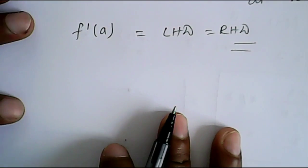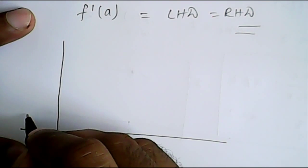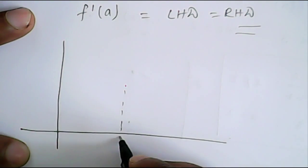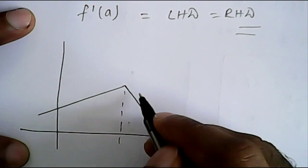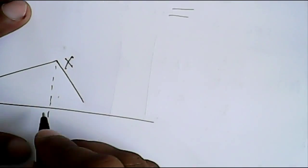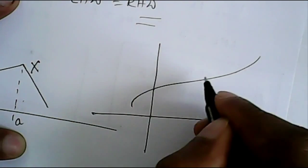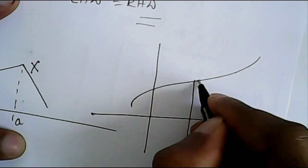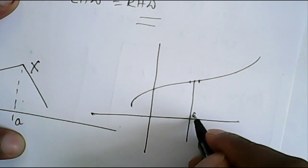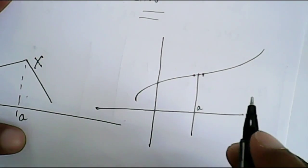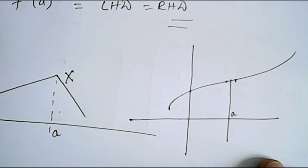The geometrical meaning of this is that the function should not have a corner or step at this particular point. This means the function is smooth at this point — the slope before point a and after point a is equal. So if the slope is equal, we say that the function is differentiable at x equal to a.